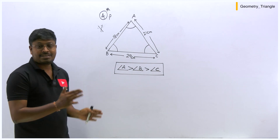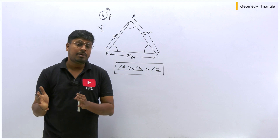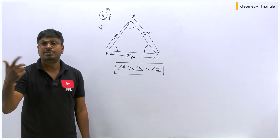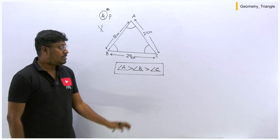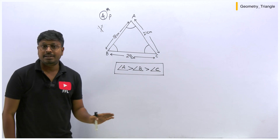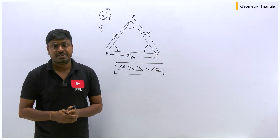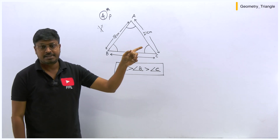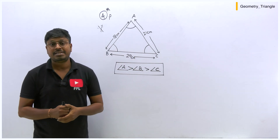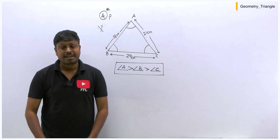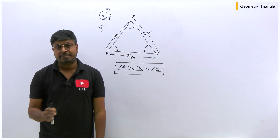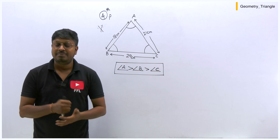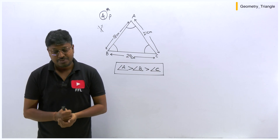In this video, we've learned four important properties of a triangle. The fifth property — based on the concurrent property — I will teach while solving questions, so as not to cause confusion here. In the next video, we will be solving questions based on triangle geometry. Don't forget to watch the Triangle 1 and Triangle 2 videos already posted on my channel. Thank you so much for watching — if you liked it, share it with friends preparing for competitive exams. Thank you, bye!